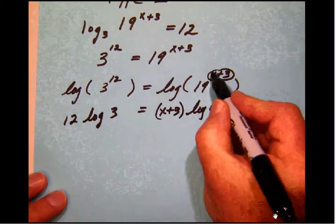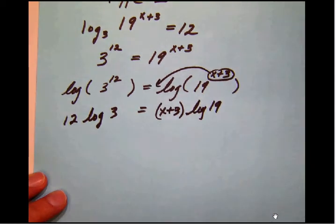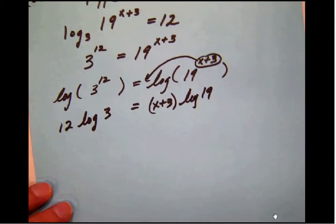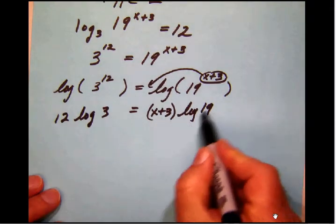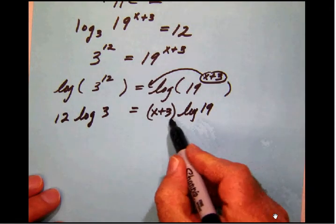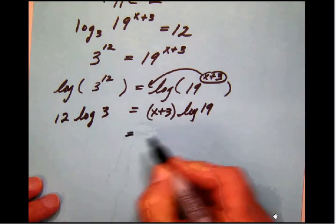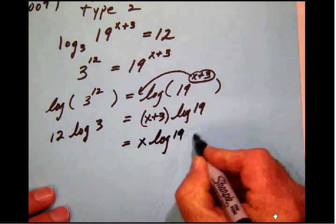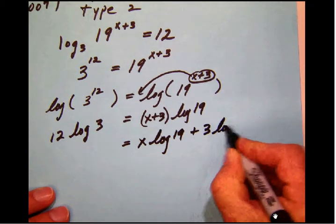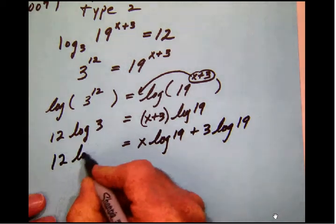But when you bring this exponent down front here that's kind of a binomial, you're going to want to keep that in parentheses because in the next step, what we're going to need to do is distribute this out. In order to separate this x from other pieces of the problem, we need to distribute in here. So on this right-hand side, we will have x log 19 plus 3 log 19, and then we'll have 12 log 3.